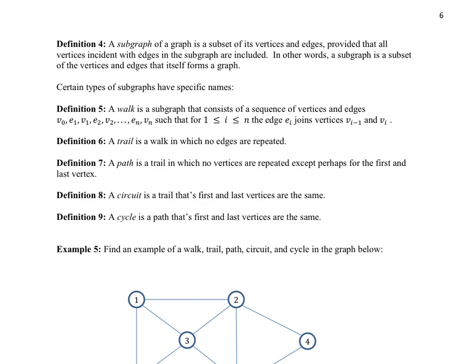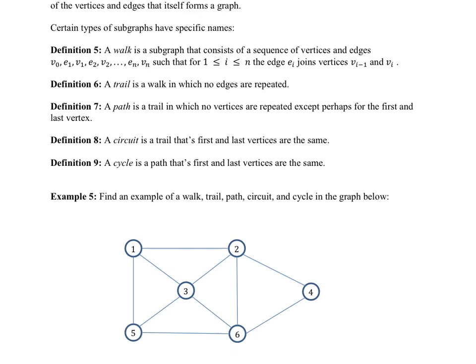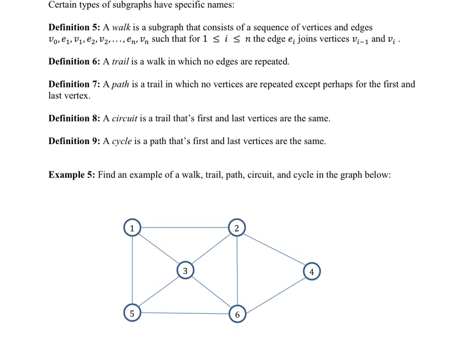So it's time to talk about certain types of subgraphs. We'll start with a walk. With a walk, you can picture yourself on the graph. Let's say you're at vertex 1, and you can walk along the edges however you like. There's no particular rule from edge to vertex. You can repeat the vertices, you can repeat the edges, and you build a walk.